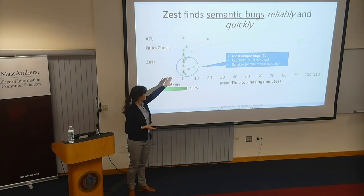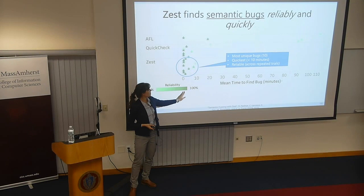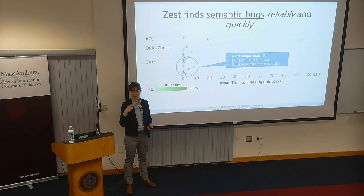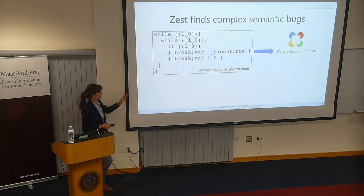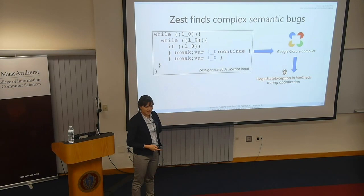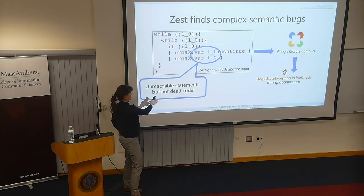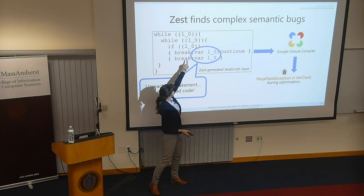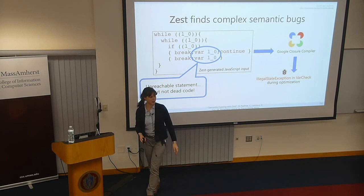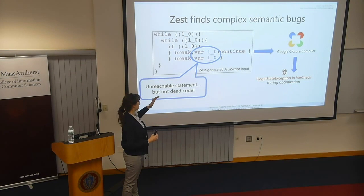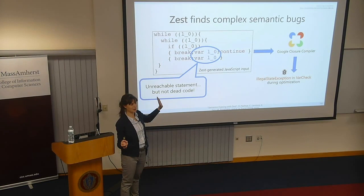Compared to regular coverage-guided fuzzing or generator-based fuzzing, our Zest tool finds semantic bugs — ones actually in the core logic — much more reliably and quickly. We had more unique bugs than other tools, and found them more consistently across different random trials. To give you a flavor: we generated JavaScript that causes an illegal state exception in a compiler. In its dead code elimination phase, the compiler tries to get rid of all the code, but because the JavaScript is structured in a weird way, you can't actually eliminate it, causing an exception.